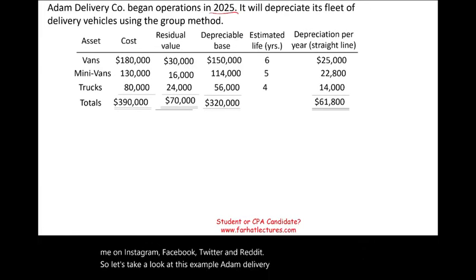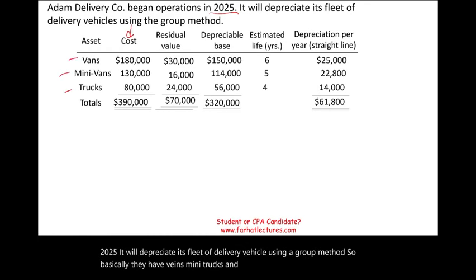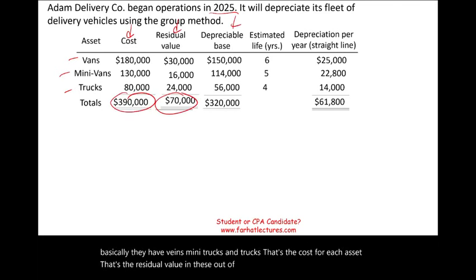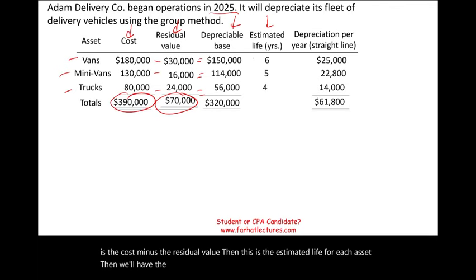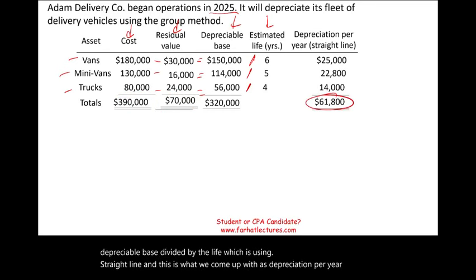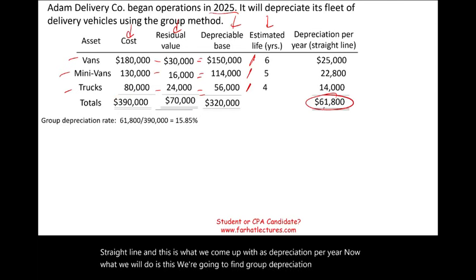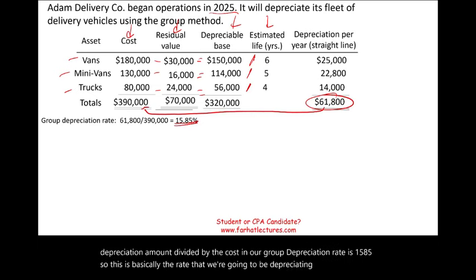Adam Delivery Company began operations in 2025 and will depreciate its fleet of delivery vehicles using the group method. They have vans, mini trucks, and trucks — each with a given cost and residual value. The depreciable base is cost minus residual value, and each asset has an estimated useful life. Using straight-line depreciation, we divide the depreciable base by the life to get annual depreciation. We then find the group depreciation rate by dividing the total depreciation amount by the total cost, which gives us a group depreciation rate of 15.85%.